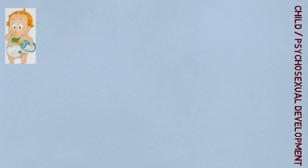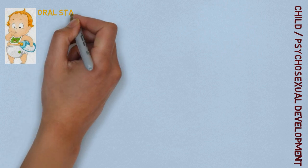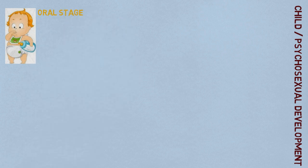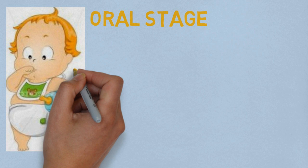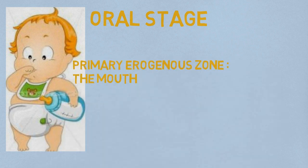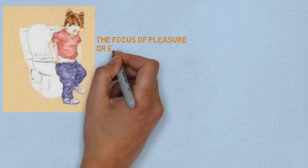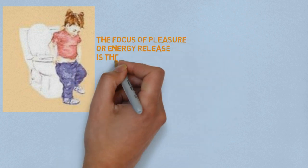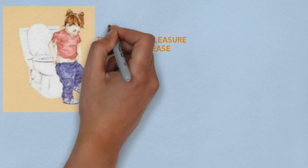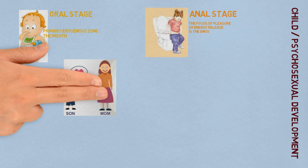The first one is called the Oral Stage. Initially, infants gain such release and derive such pleasure from the act of sucking. The mouth of the infant is her or his primary erogenous zone. This followed by a stage in which the focus of pleasure or energy release is the anus, particularly in the act of defecation, and is accordingly termed the anal stage.